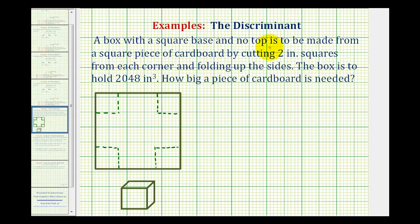A box with a square base and no top is to be made from a square piece of cardboard by cutting two inch squares from each corner and folding up the sides.